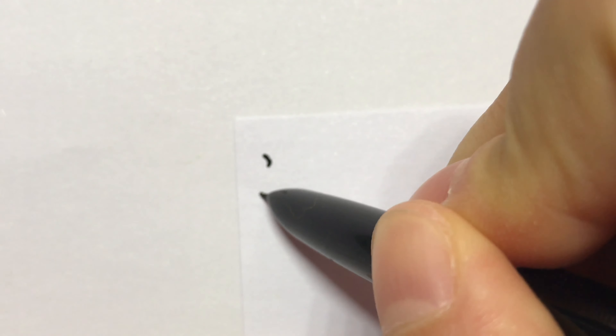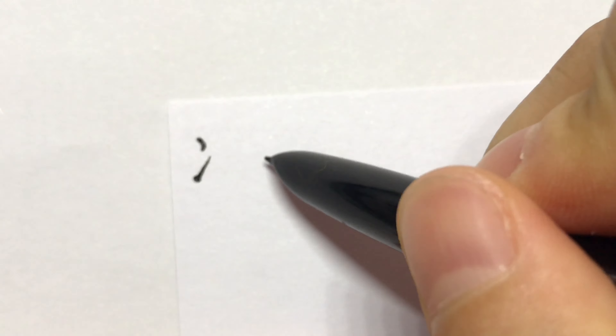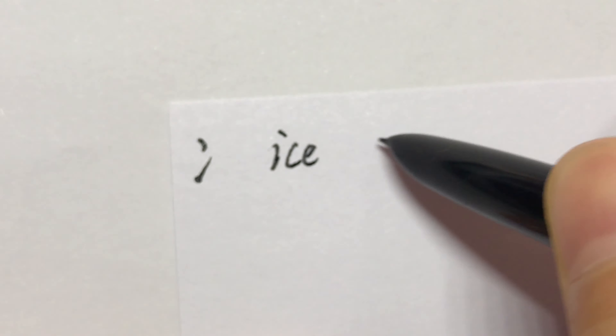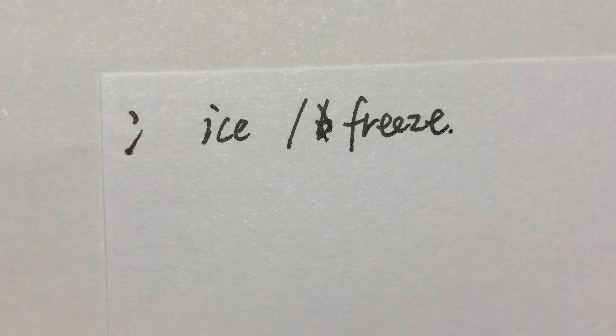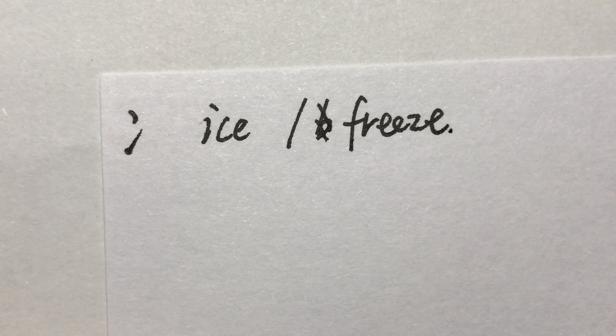Hi, welcome to my channel. In today's video, let's talk about the Chinese radical 两点水 (liǎng diǎn shuǐ). Characters with 两点水 are ice or phrase related. This radical is usually on the left side of a character.